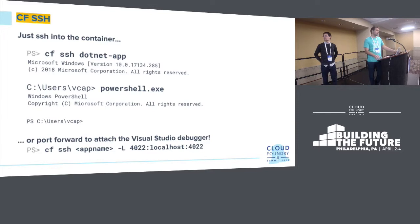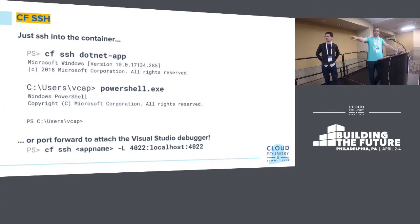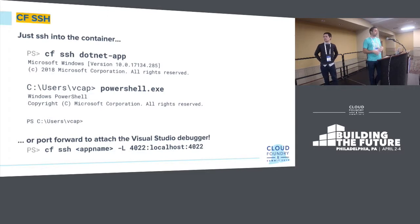CFSSH works now, and you can directly SSH into a container. First thing you want to do is run PowerShell because command.com is not very powerful — that's why PowerShell exists. You can also do port forwarding, which is useful if you want to use the CFSSH transport to connect your Visual Studio debugger to your application instances actually running in Cloud Foundry on Windows.